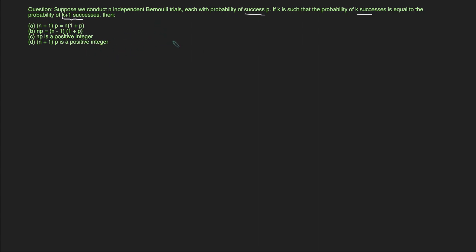Let's take a look at the information that's given to us. We are given that we have to work with Bernoulli trials. In the case of Bernoulli trials, there are two possible outcomes: one is success and the other is failure. We are given that the probability of success is P, which automatically implies that the probability of failure is 1 minus P, as these are the only two possible outcomes. All of these trials are independent and we are conducting N trials.